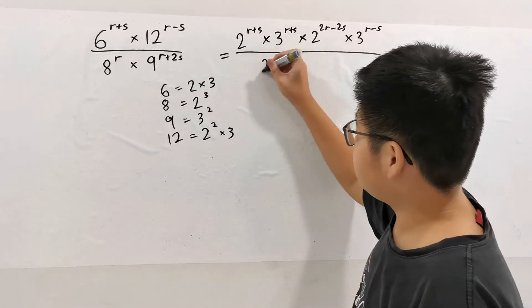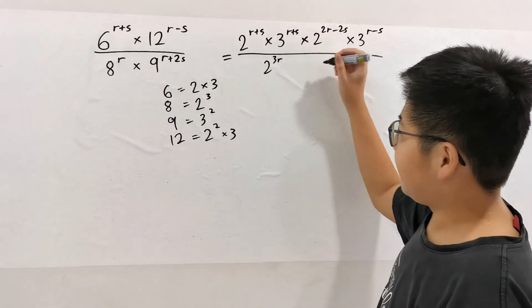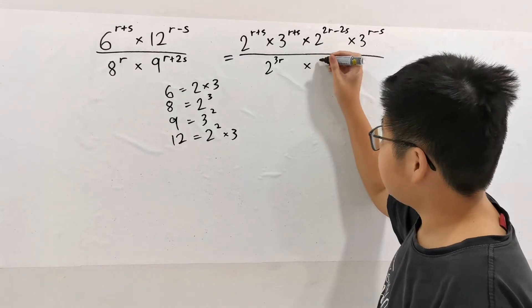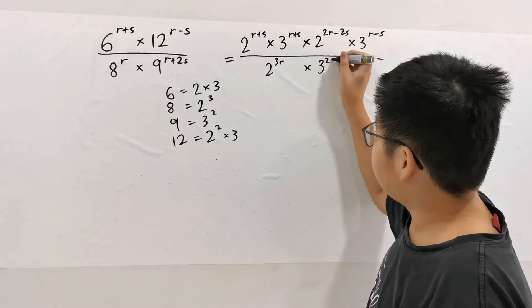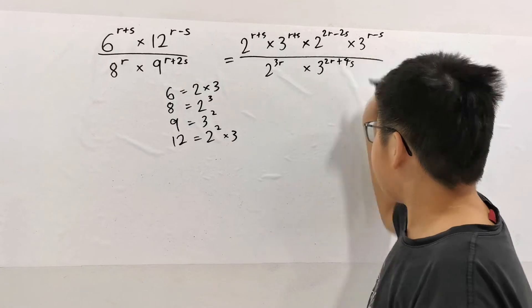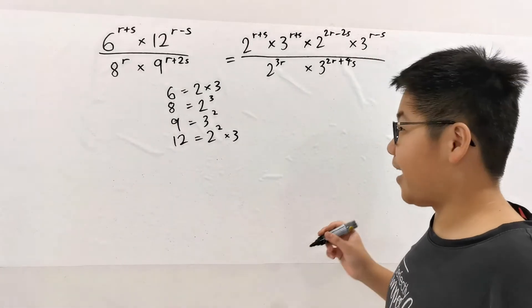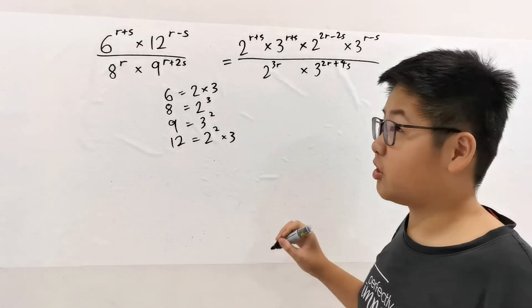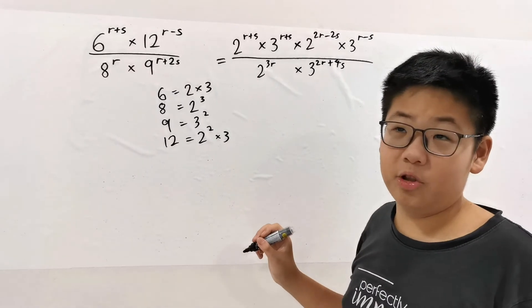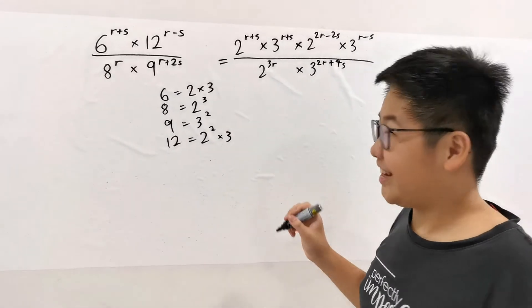All over, 8^R is 2^(3R) and 9^(R+2S) times 3^(2R+4S). It might be useful if you can memorize the first prime factorizations or so. I've memorized them up to 150-ish.